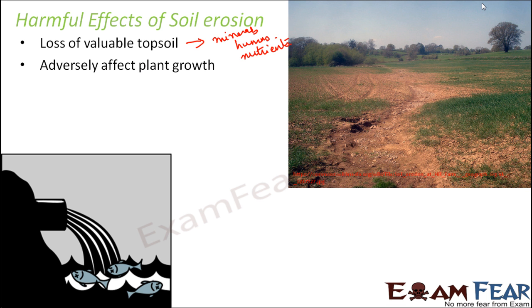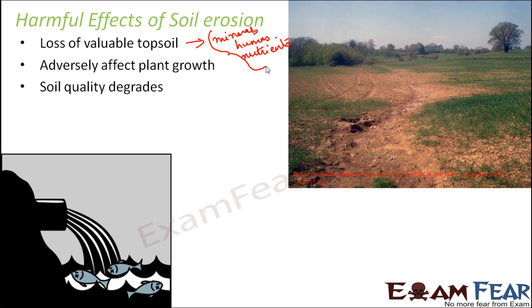Secondly, it adversely affects plant growth. When we have lost all these nutrients, obviously plants will not grow properly because plants need minerals, humus, and nutrients — everything. When that is not there, plants cannot grow properly. Thirdly, soil quality degrades because the soil quality is all about the content of the O, A, and B layers. When those layers are lost, the soil quality will also become poor.